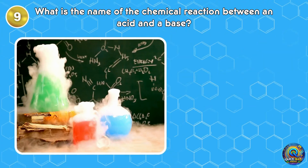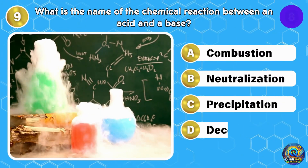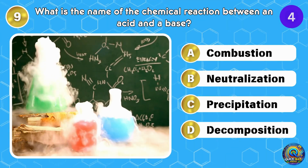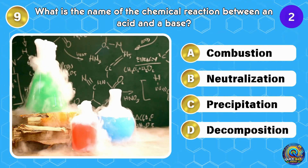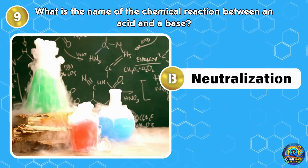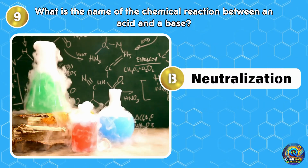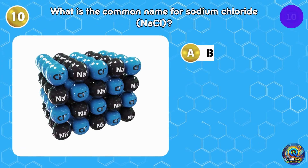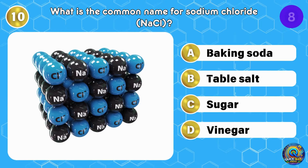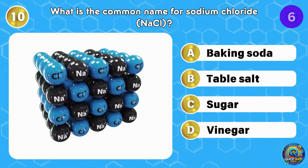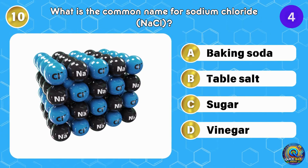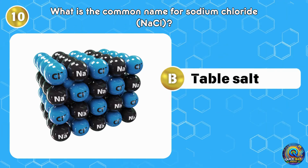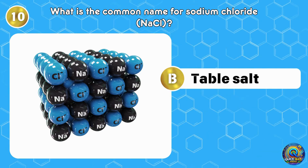What is the name of the chemical reaction between an acid and a base? The answer is neutralization — it's chemistry's way of saying let's calm down. What is the common name for sodium chloride, NaCl? The answer is table salt. You've definitely sprinkled it on your fries. Let's move on.